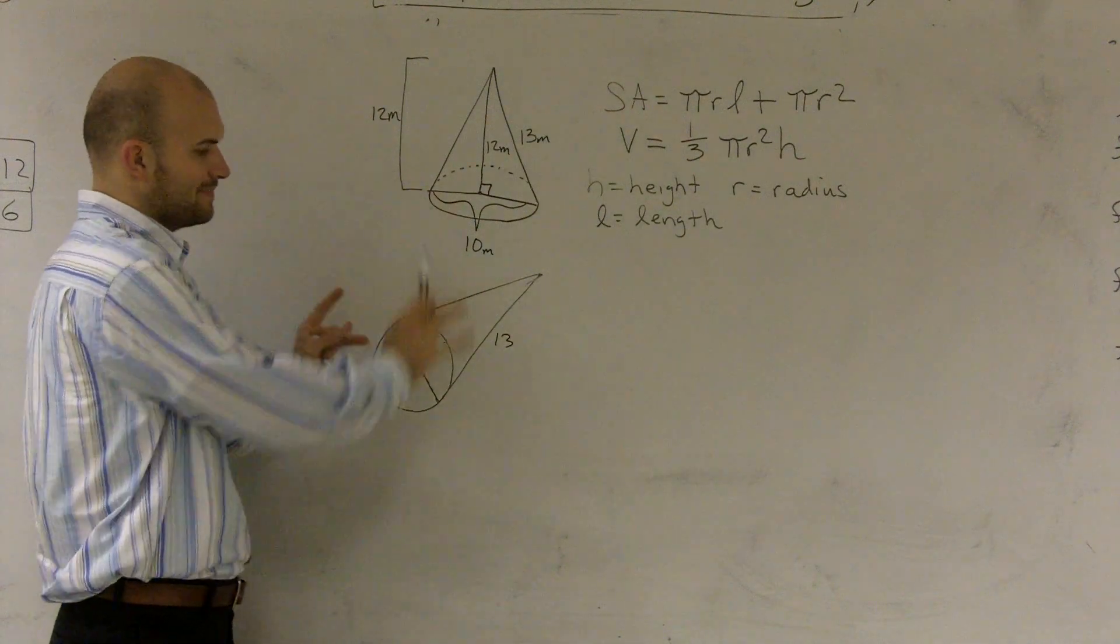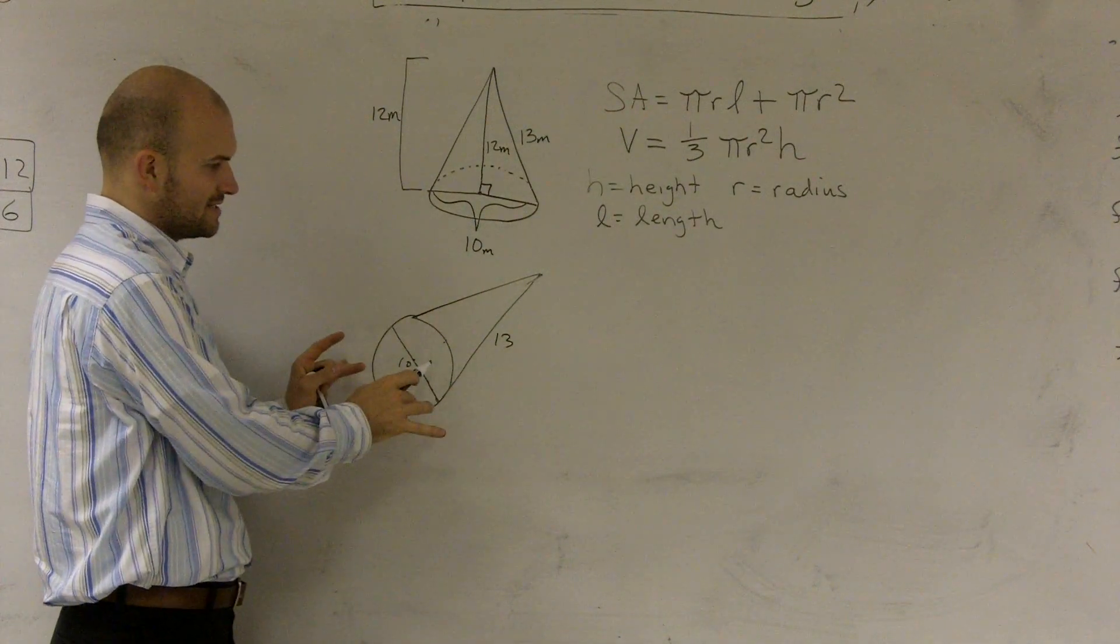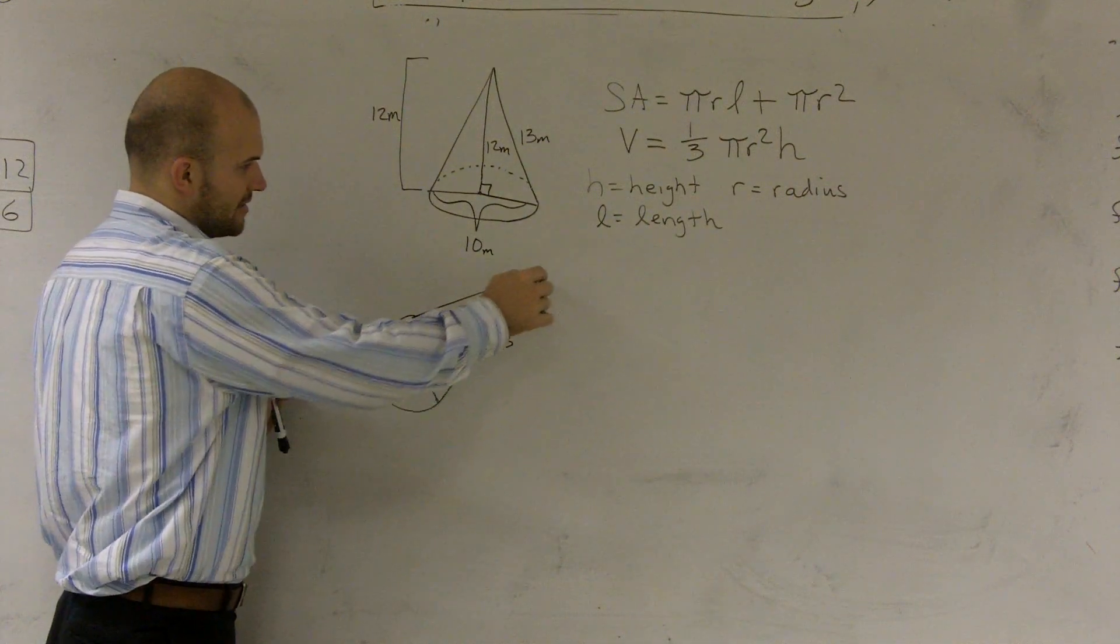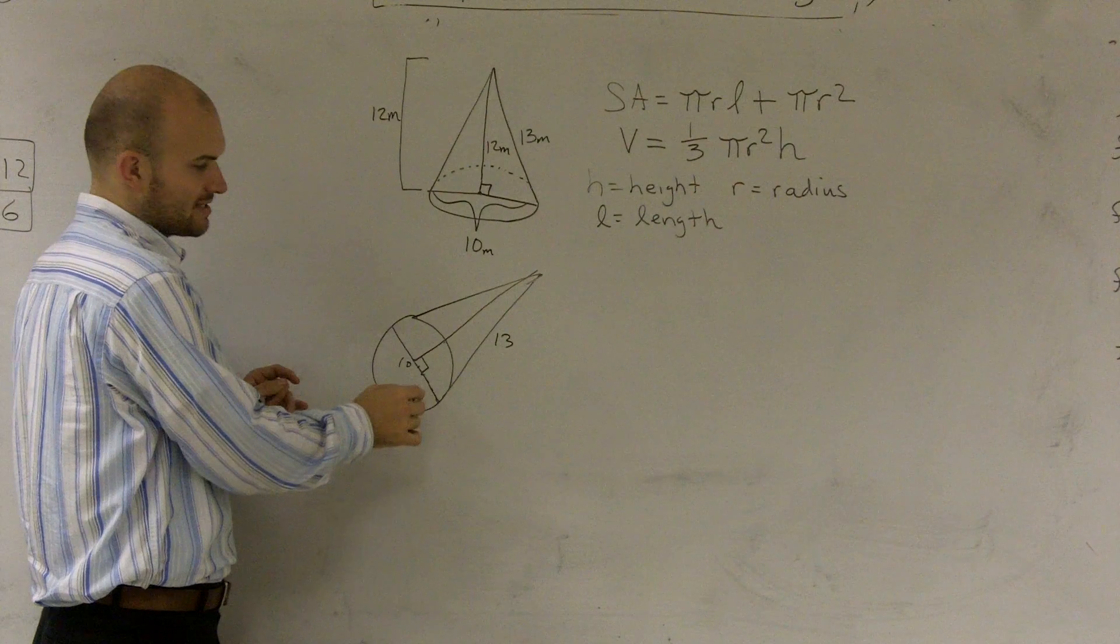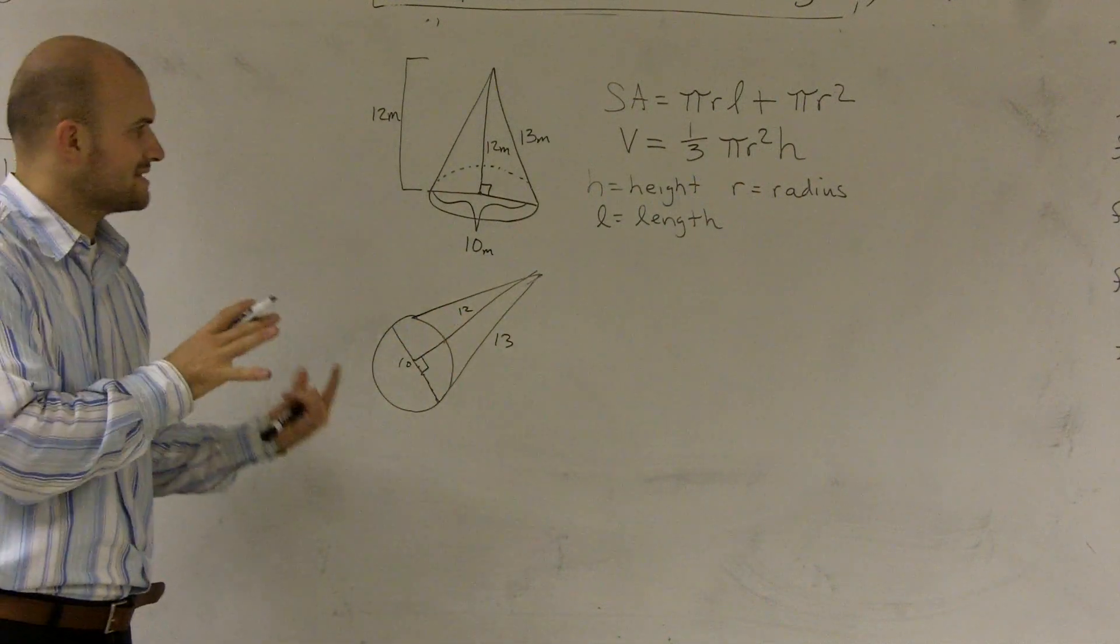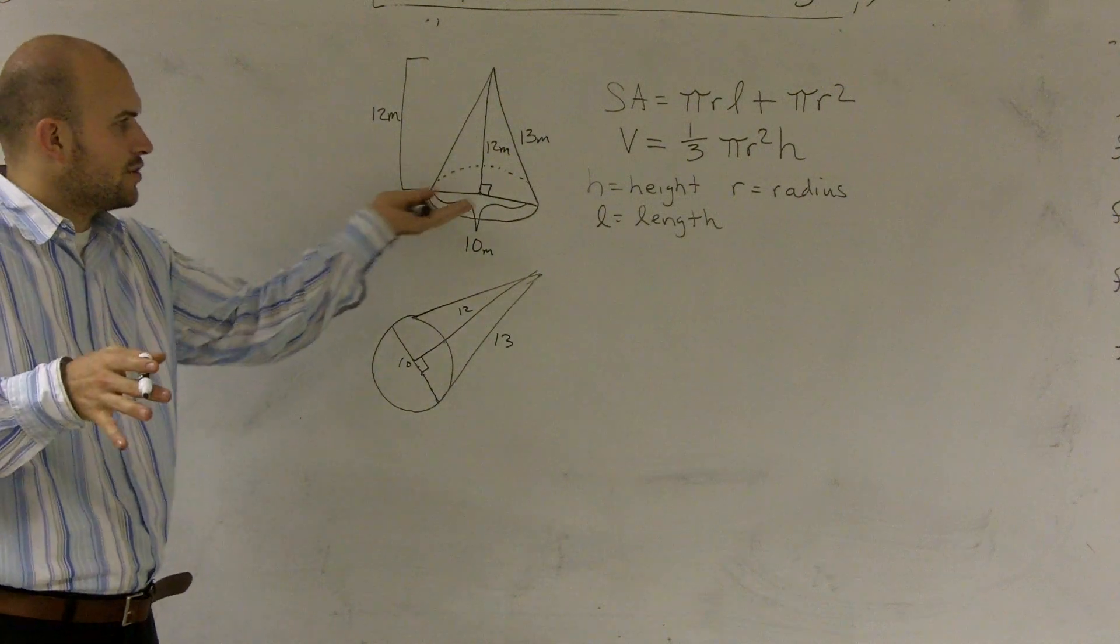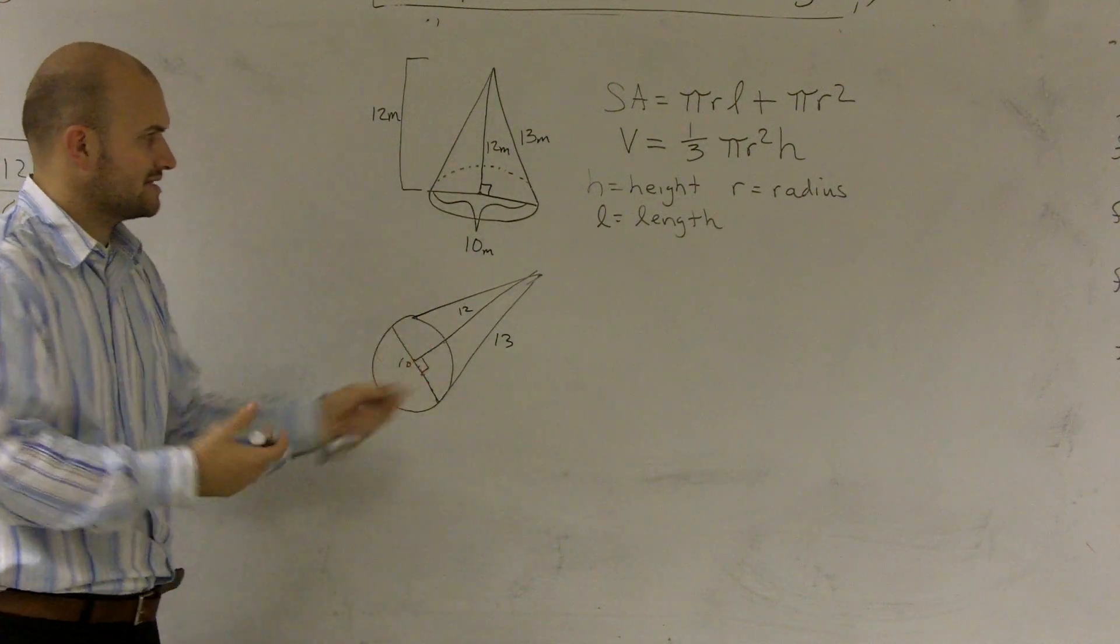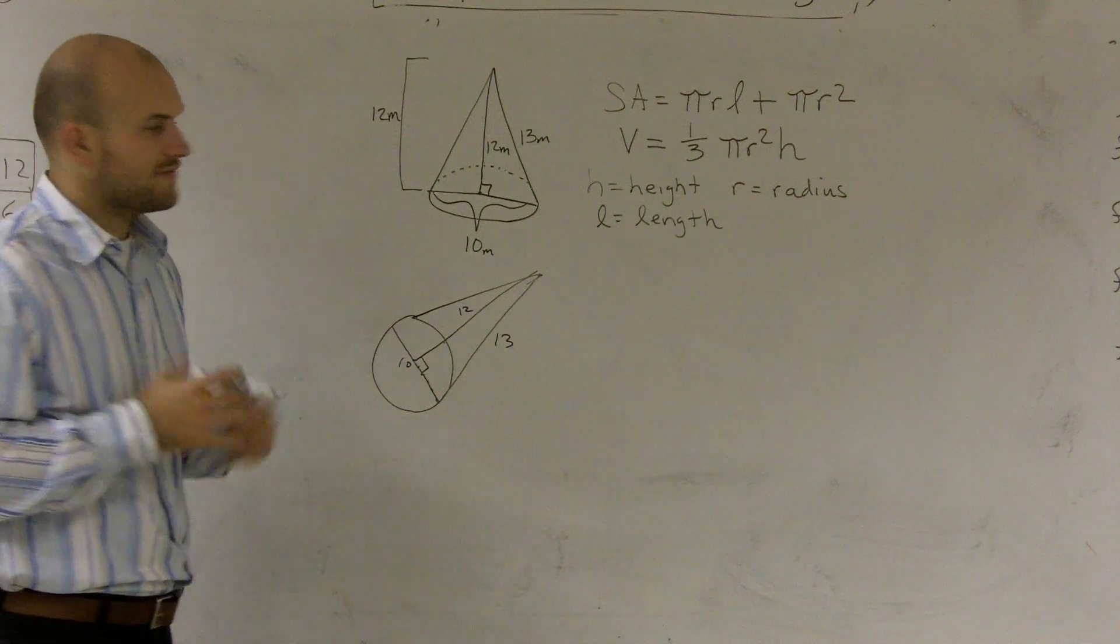What I did was I tipped this over so you can see it in a different light, where 13 would be this length and 10 this length. If I draw the height again, it makes a 90-degree angle—that would be 12. This is a cone sitting on a flat surface, and this is it tilted to its side so you can see the bottom or base.